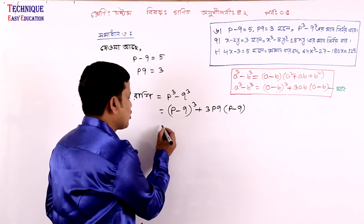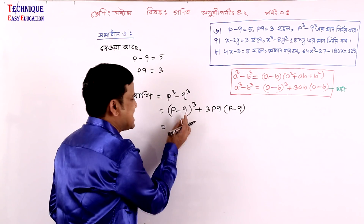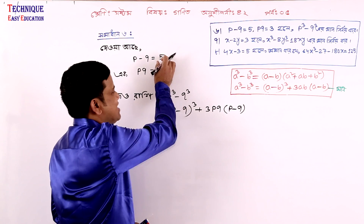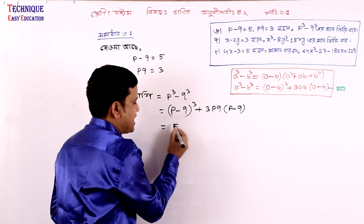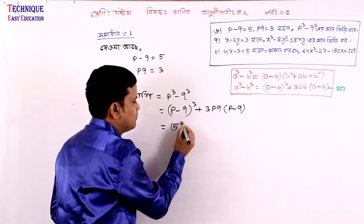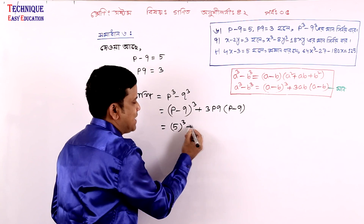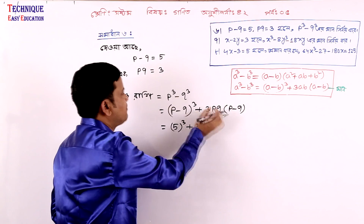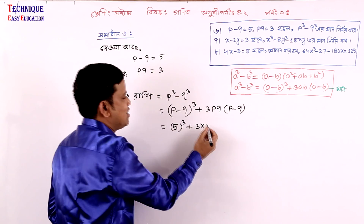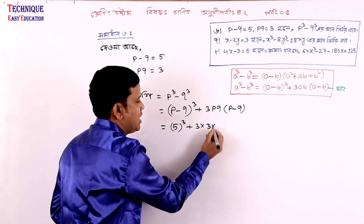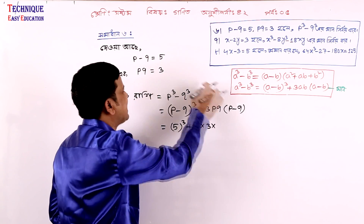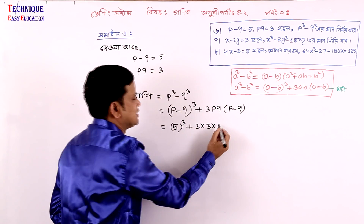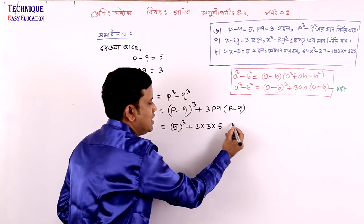Since p minus q equals 5: p cube minus q cube equals p minus q whole cube plus 3 times pq times p minus q. p minus q is 5, pq is 3, and p minus q is again 5.